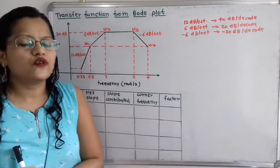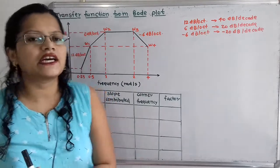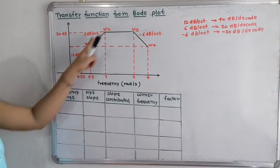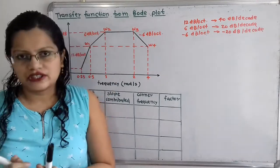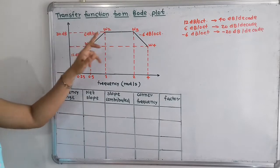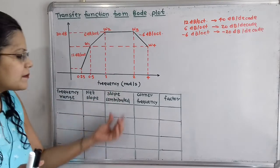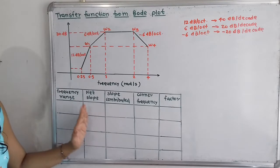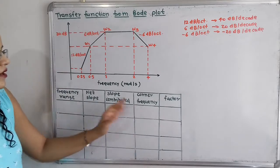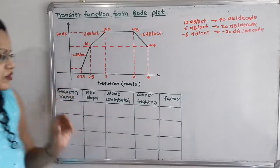Now we will move to the calculation of factors and corner frequencies. For that we will make a table. The first column is frequency range. Then the next column is net slope — in a Bode plot the slope given is the net slope. The third column is slope contributed, which we calculate from the second column. Next is corner frequency, and the last column is the factor.